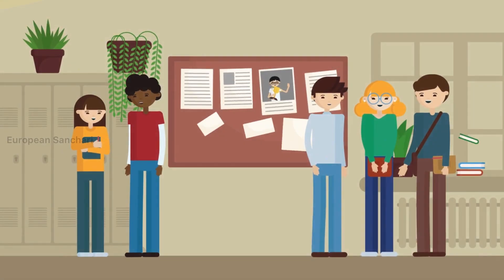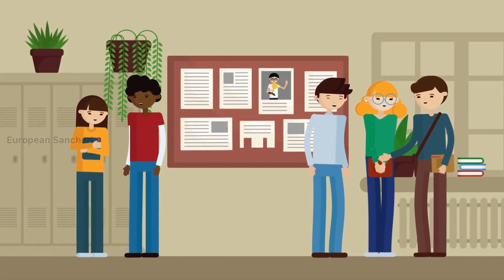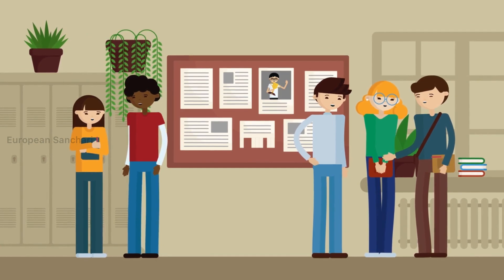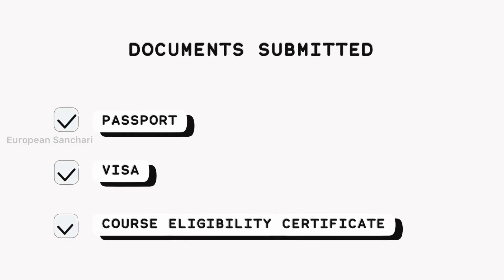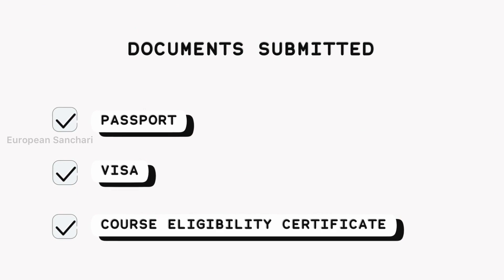I decided to join the course. I received a list of all available schools. You can start at any school you choose. When you join the course, you will need to bring your passport, your visa, and documents such as your rental agreement.